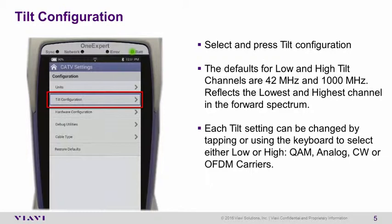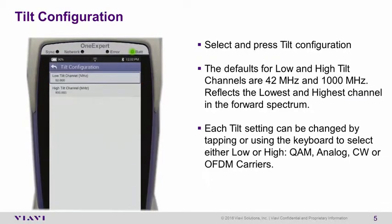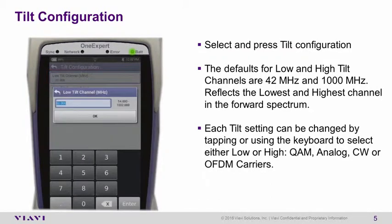Selecting and opening Tilt Configuration allows the high and low tilt channels to be adjusted. The default from the factory is set to 54 MHz for the low and 1 GHz for the high. By tapping and opening one of your tilt channels, this frequency can be changed to the desired frequency for testing in the tilt measurement.